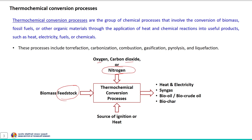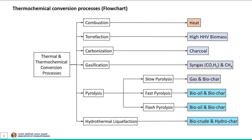This scheme represents the thermochemical conversion of bio-based feedstock, fossil fuel and other organic material using a specific medium. Some thermochemical conversion processes are carried out in oxygen, carbon dioxide or steam as a medium, while some are carried out in absence of oxygen using a suitable heat source. The products include heat and electricity, syngas, bio-crude oil and solid product as biochar. This flowchart provides a visual representation of different thermochemical conversion processes and their respective products.